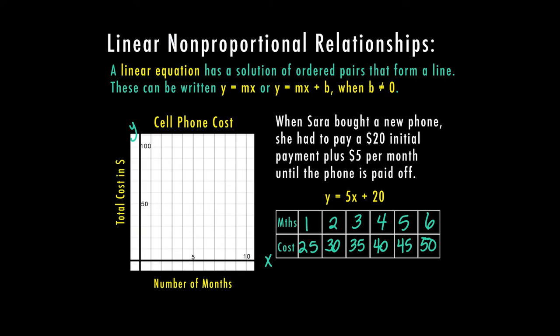In order to mark these on our graph, we would go from 1 up to 25, 2 goes to 30, 3 goes to 35, 4 goes to 40, 5 goes to 45, 6 and so on. Based on those points, we do know that zero months would be 5 times zero, which is zero. And then if I add 20 to that, I would be at $20. So zero here goes up to 20.